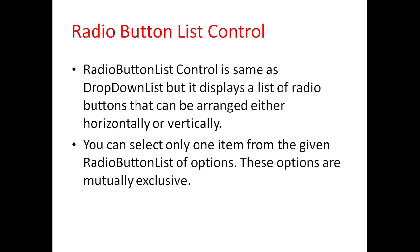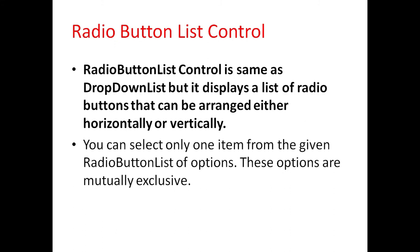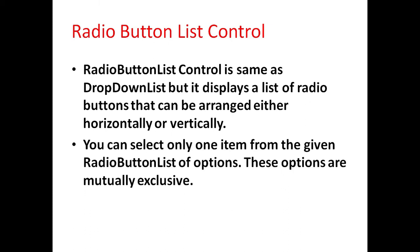Next is radio button list control. Radio button list control is similar to drop down list, but it displays a list of radio buttons that can be arranged either horizontally or vertically. You can select only one item from the given radio button list of options. These options are mutually exclusive.